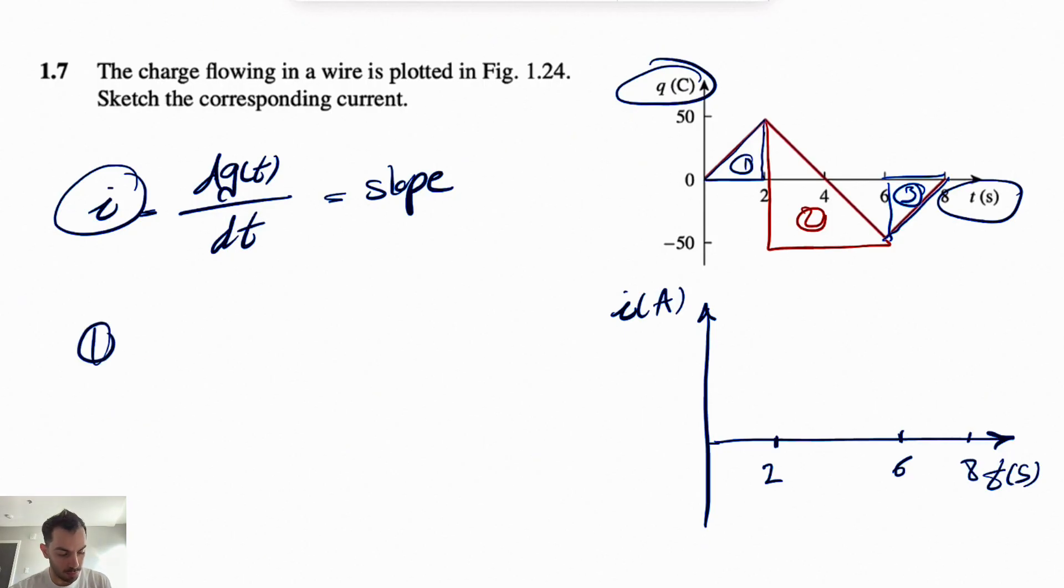Let's start with the first region. So basically, the slope would be the tangent of these right triangles that I have. So if we look at this one, the alpha, the tangent of alpha would be the opposite over adjacent. The opposite is 50, this side. The adjacent is 2. So we're going to have 50 divided by 2, which is 25. And the slope is positive, so the current is positive too, so 25 amps.